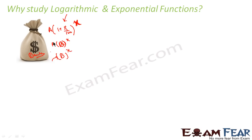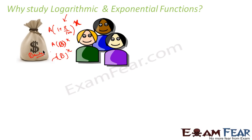Just understand that the example of exponential equation is: you put money in the bank and the money grows exponentially. This is one example where you have an exponential equation. Similarly, we have population growth — the population also grows exponentially. Starting from two people, it becomes four, then keeps growing. The population grows exponentially, as is happening with India's population.